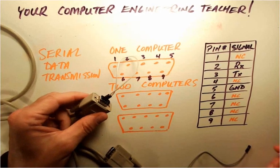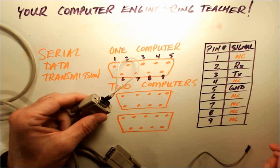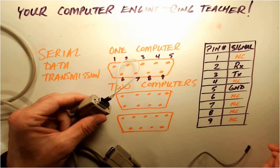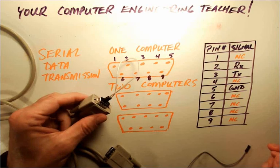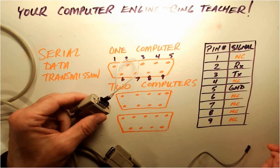Now I've got a loopback connection. So now data can go out pin 3 and it will loop back and be received in pin 2.